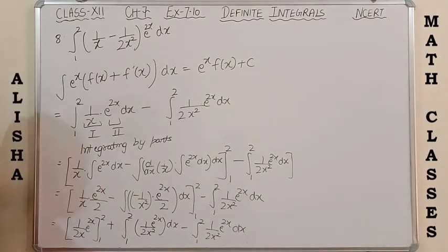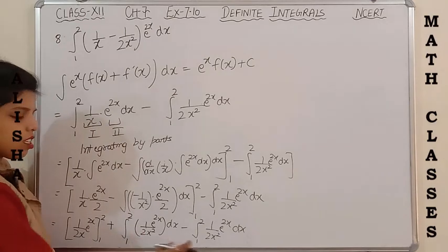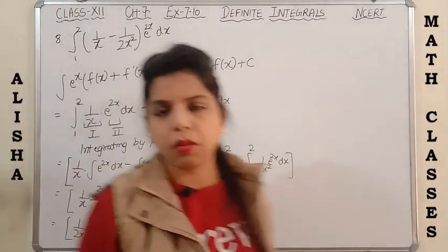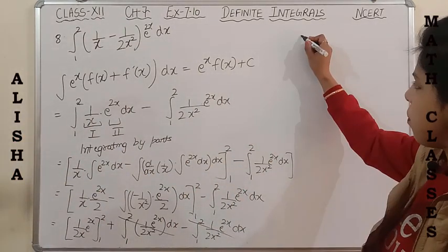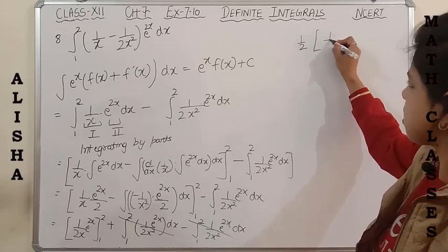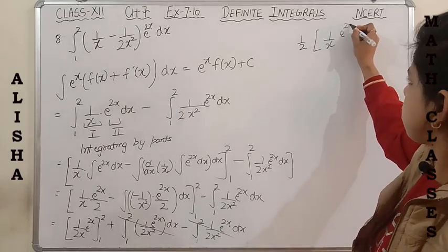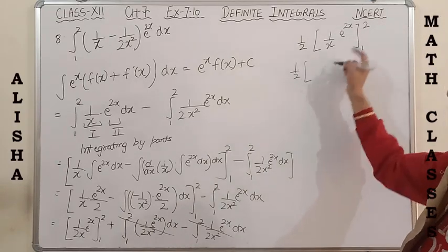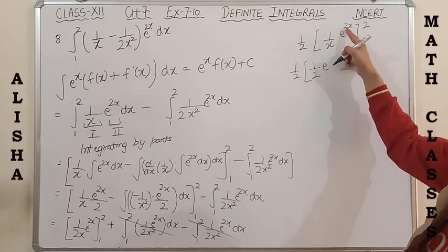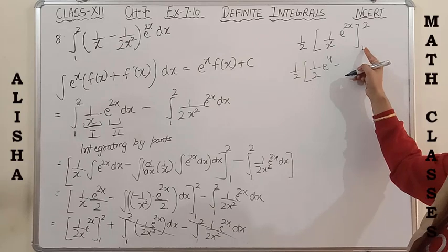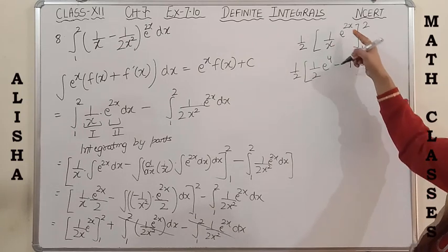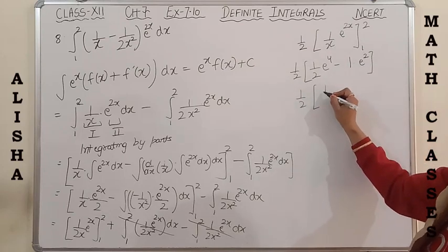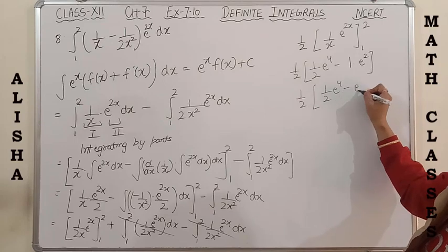Finally, we just put the limits into the function (1/x) × e^(2x), with 1/2 taken outside as a constant. Putting upper limit x = 2: (1/2) × e^(2×2) = e^4/2. Putting lower limit x = 1: 1 × e^(2×1) = e². So the answer is (1/2)(e^4 - e²).